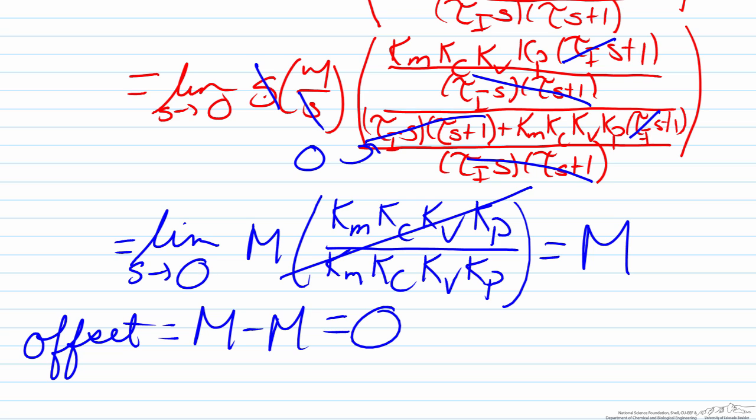So in this screencast we have shown how P and PI control respond differently to a process when there is a change in the set point.